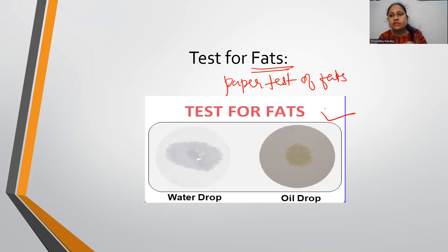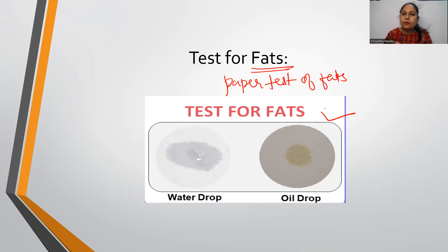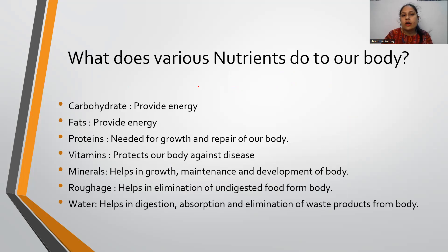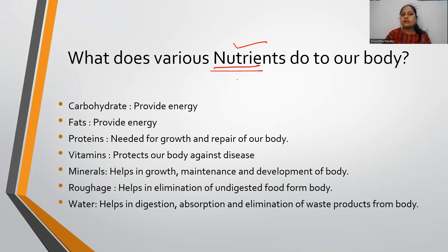So we have learned how to check three basic components of food: carbohydrates, proteins, and fats. There are also tests for vitamins and minerals, though those are not in your chapter. Other components of food include vitamins, minerals, dietary fibers, and water. These substances — carbohydrates, proteins, fats, vitamins, and minerals — help the body grow, repair, develop, fight infection, and prevent disease. They are called nutrients.